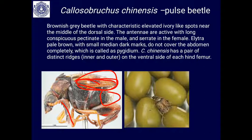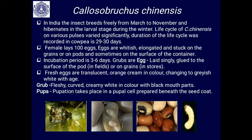The adult has a distinct ridge on the ventral side of the femur. You can find it infesting moong bean, where it lays eggs. In India, the insect breeds freely from March to November and hibernates in the larval stage during winter. The duration of the life cycle on various pulses varies significantly.